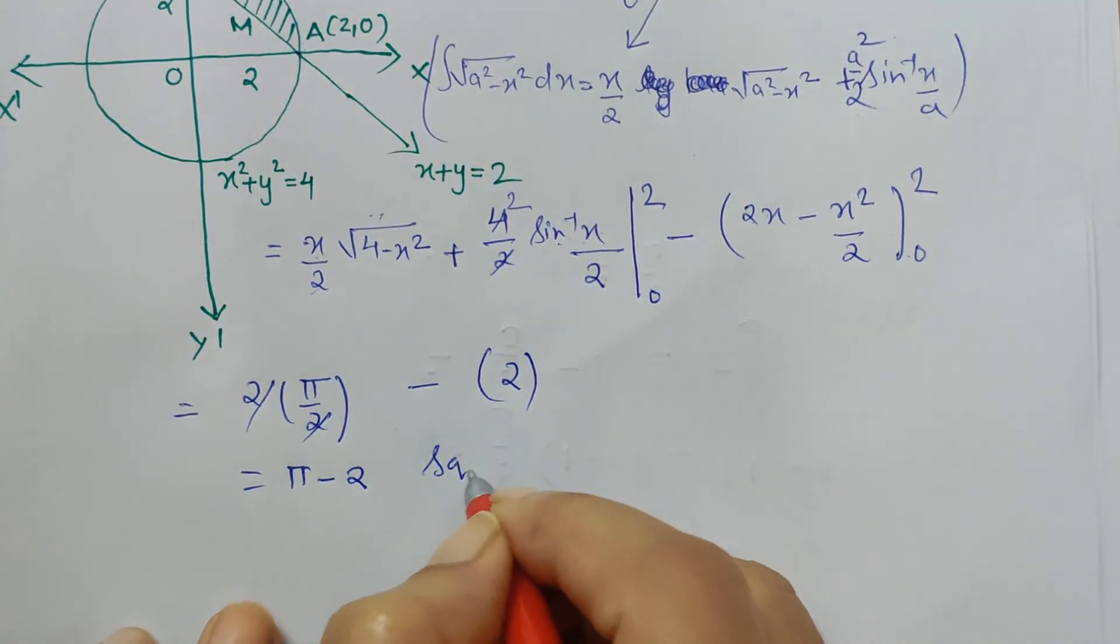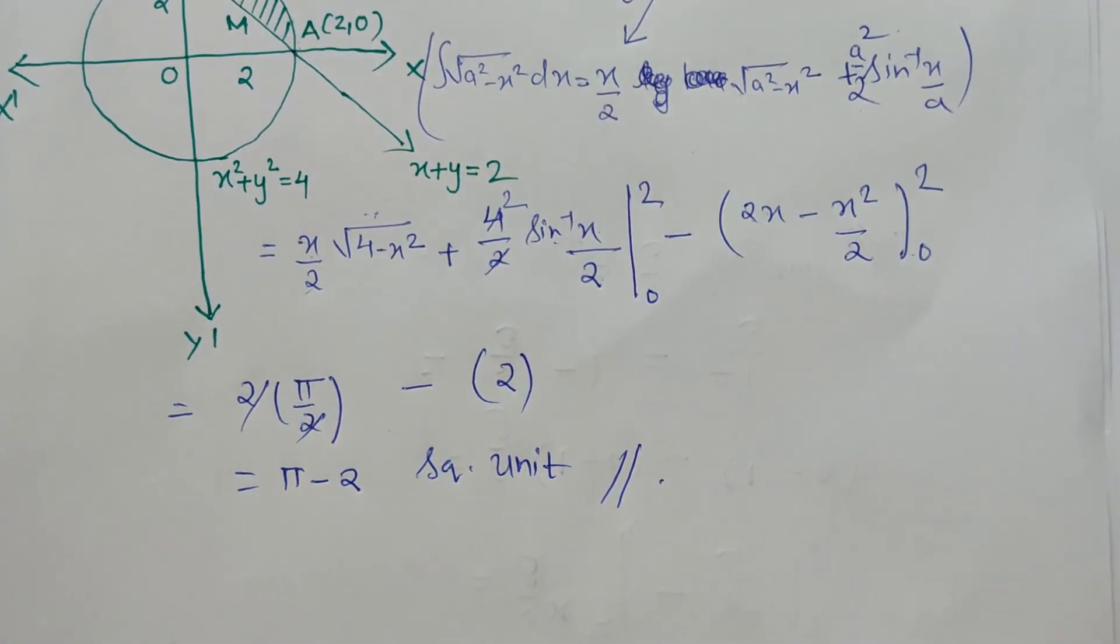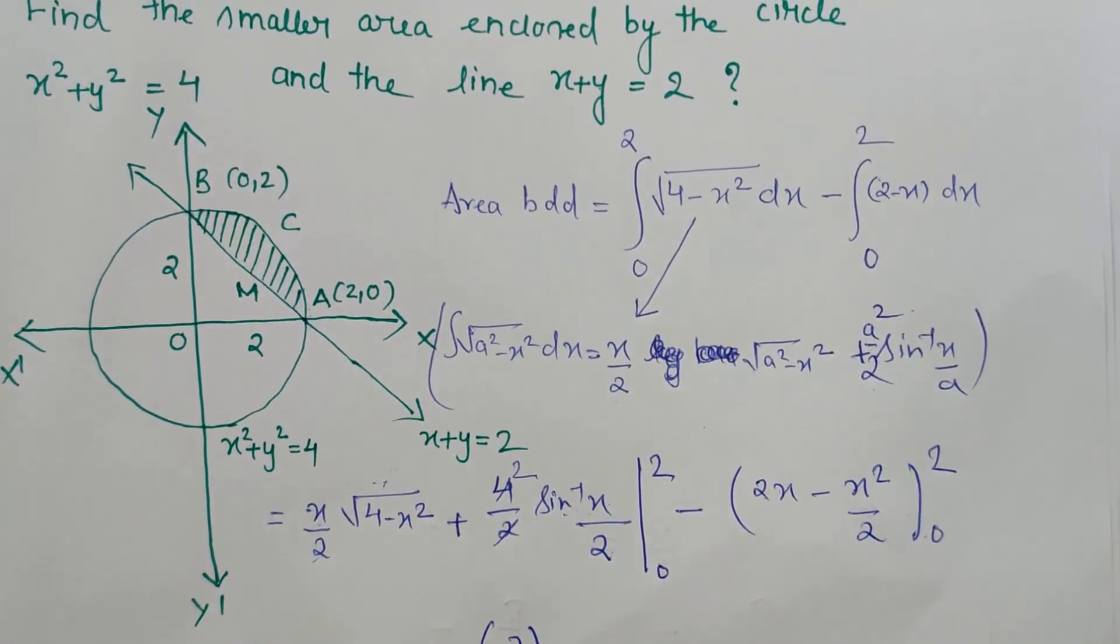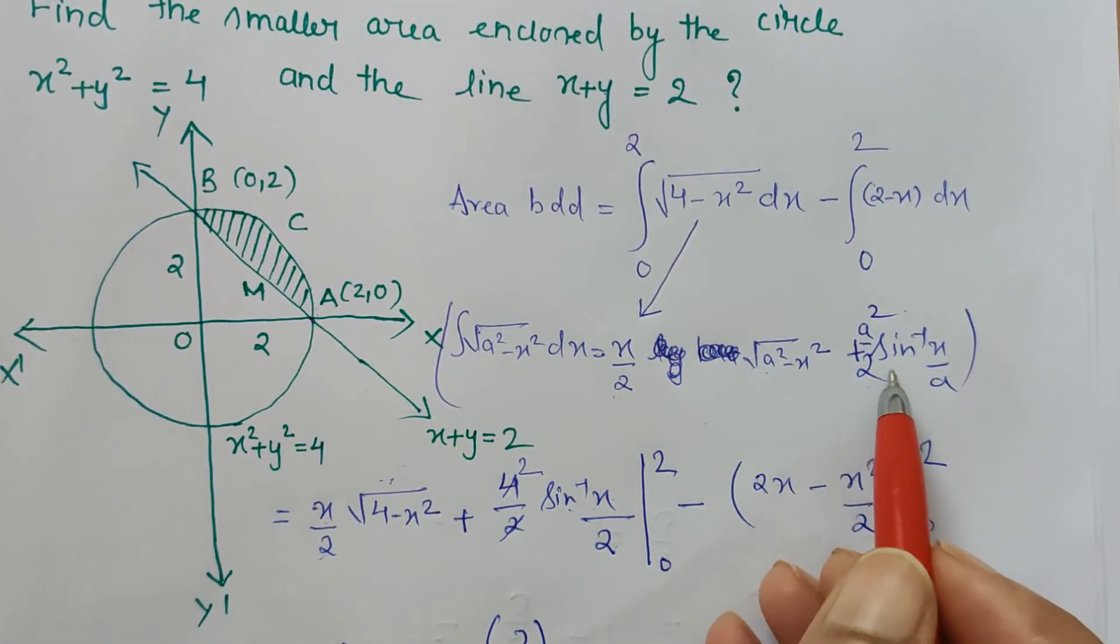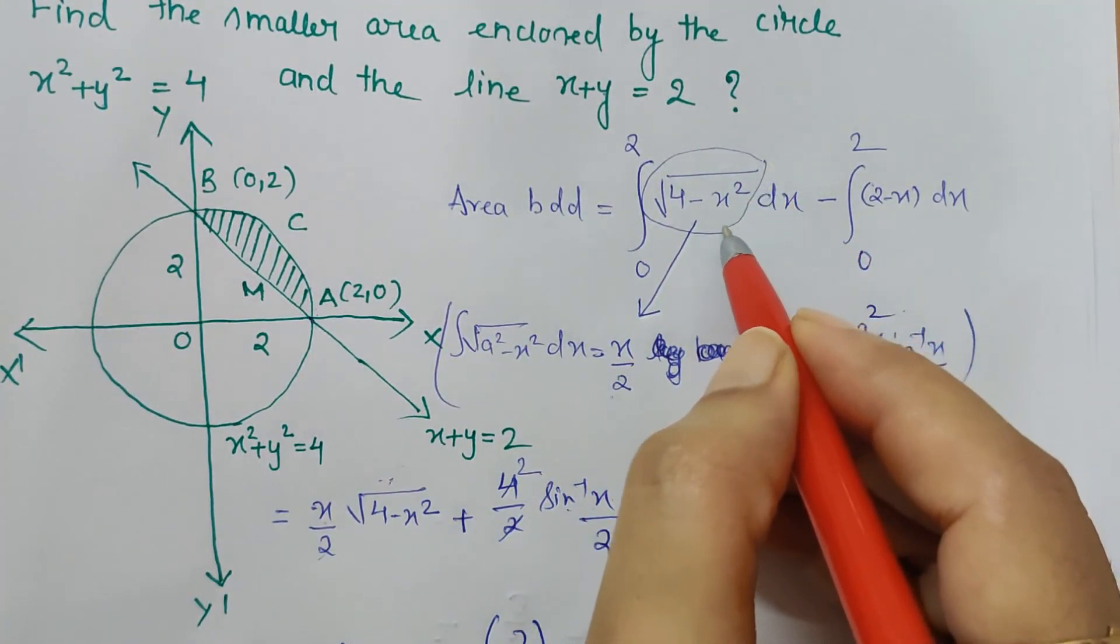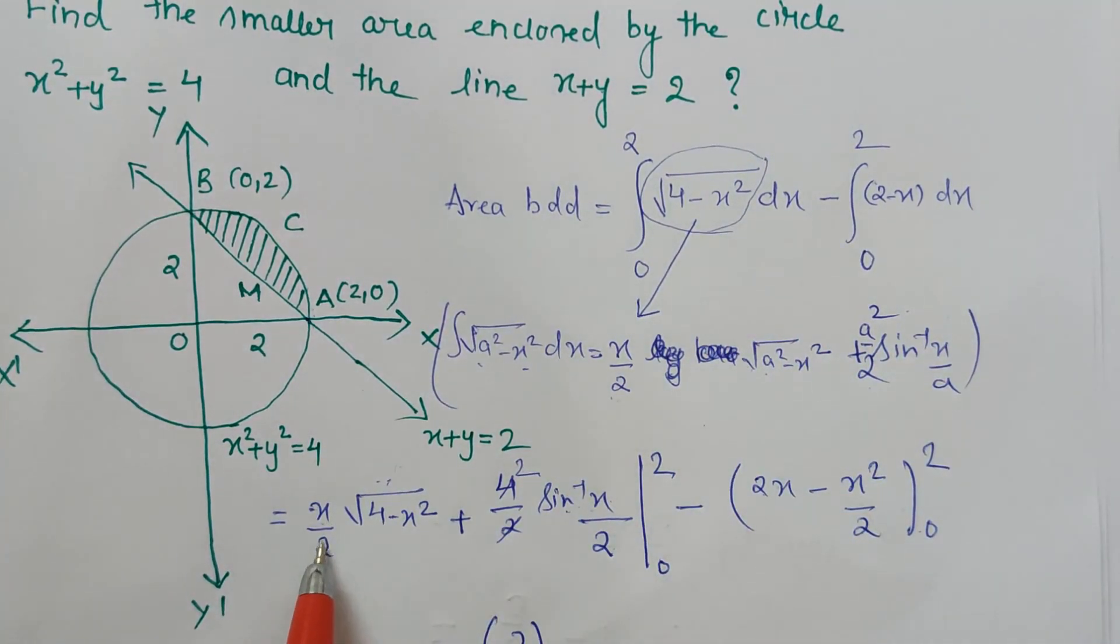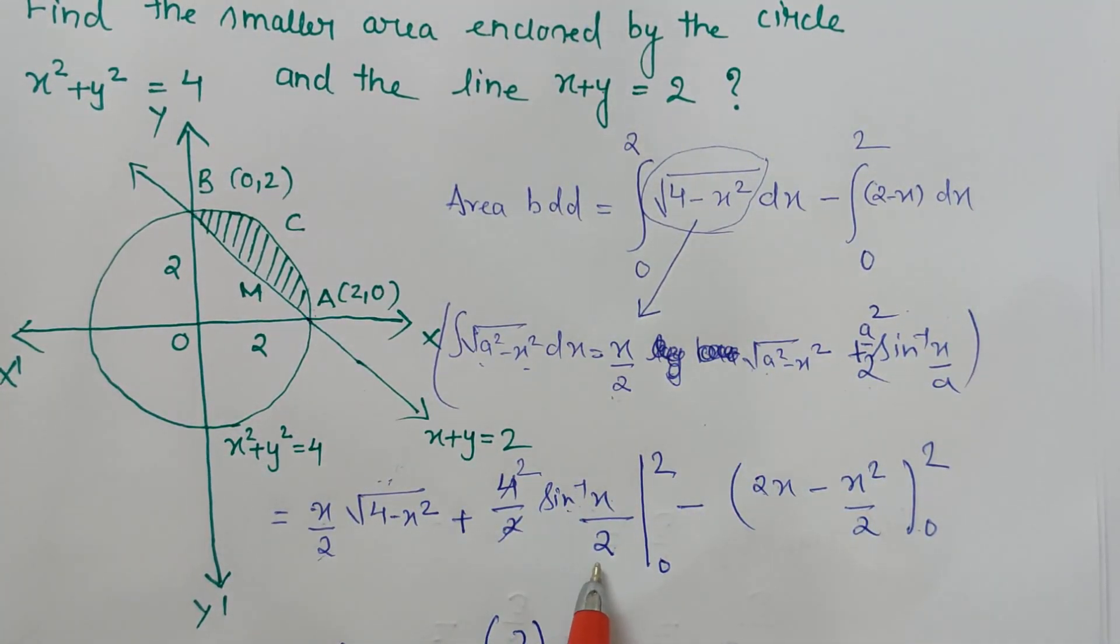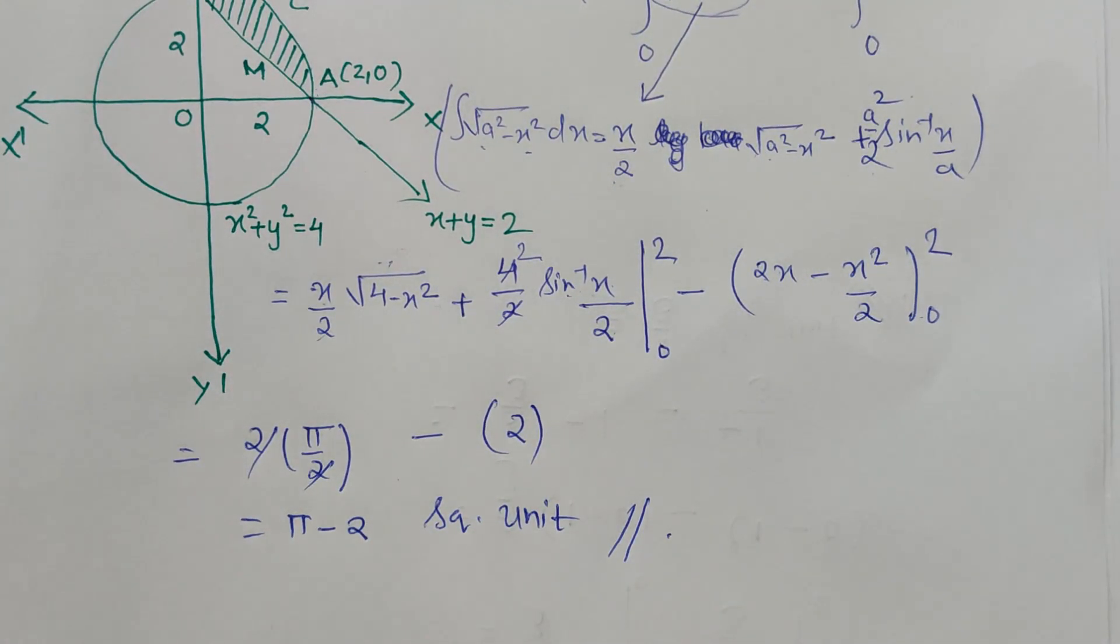We have to keep in mind that (x/2)√(a² - x²) + (a²/2)sin⁻¹(x/a) is the expansion of the special integral √(a² - x²). By putting this formula and after simplification, the required area is π - 2 square units. Thank you.